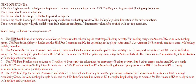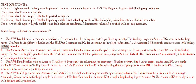A. Use AWS Lambda with an Amazon CloudWatch Events rule for scheduling the start/stop of backup activity. Run backup scripts on Amazon EC2 in an auto-scaling group. Use auto-scaling lifecycle hooks and the SSM Run Command on EC2 for uploading backup logs to Amazon S3. Use Amazon SNS to notify administrators with backup activity metadata.